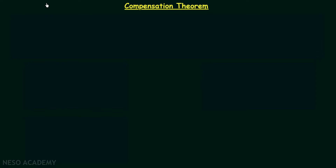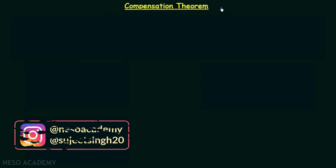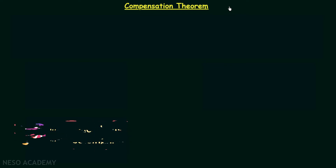We have completed 5 theorems in this chapter and now we are going to discuss our 6th theorem: the compensation theorem. Before I explain it, I will first explain one very basic concept. We all know Ohm's law — when a current flows through a resistor there will be a voltage drop across that resistor. This voltage drop opposes the main source voltage, and therefore it can be treated as a voltage source acting opposite to the main voltage source.